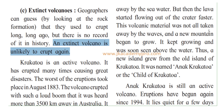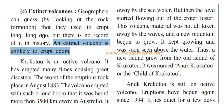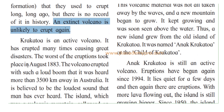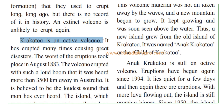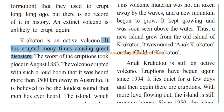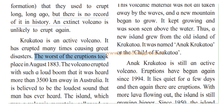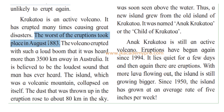Now let's learn about the Krakatoa volcano, on which this lesson is based. Krakatoa is an active volcano — it keeps erupting. It has erupted many times, causing great disasters and tremendous damage. The worst of the eruptions took place in August 1883. When it burst and erupted in 1883, it was the worst damage that it did.